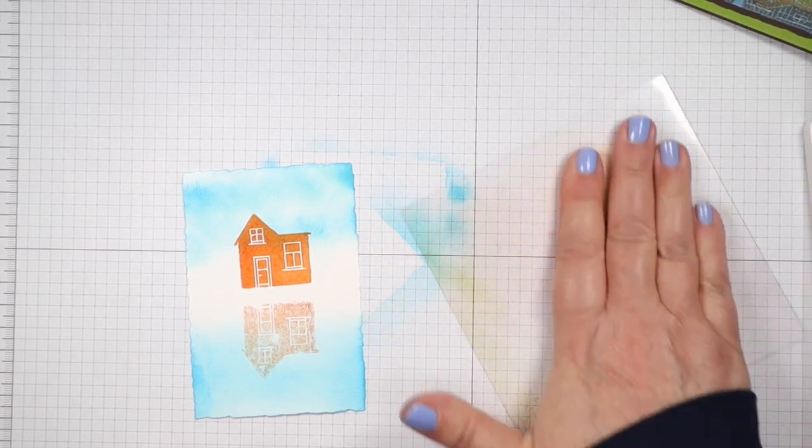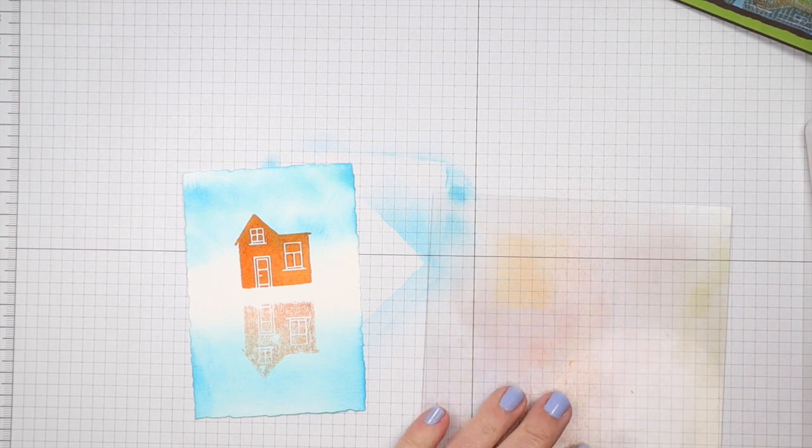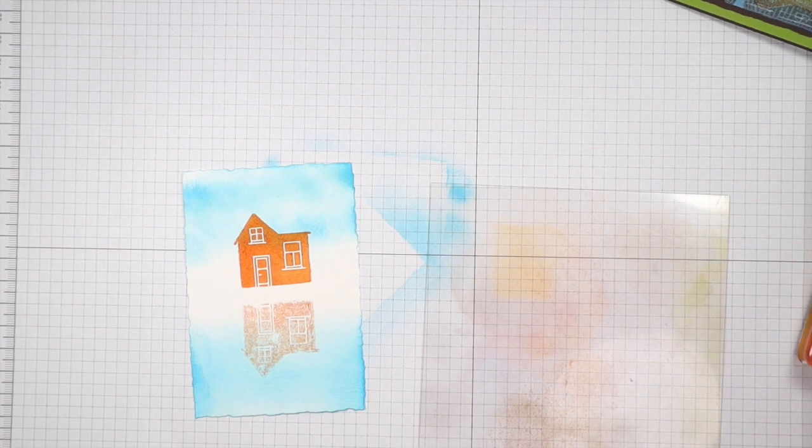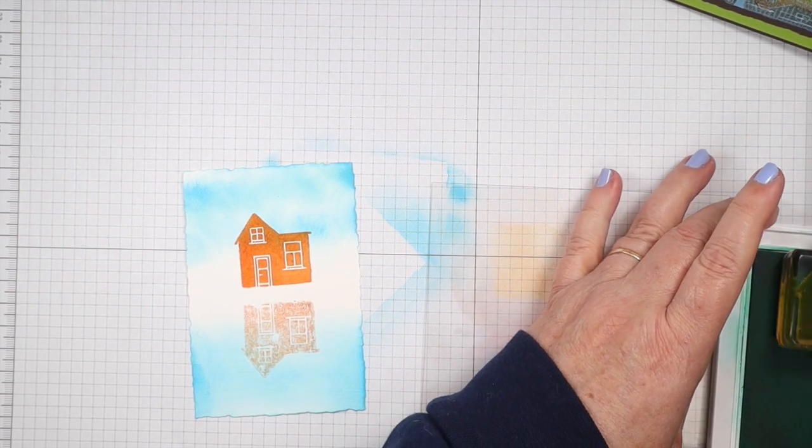And then I'm going to wipe this off. I'm just wiping it off on my scrap paper. And I'm going to repeat that with other colors here. I just want to clean my stamp a bit here. And the next one will be Coastal Cabana. I'm going to do that exact same thing with Coastal Cabana.